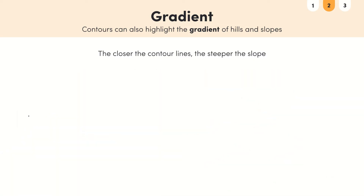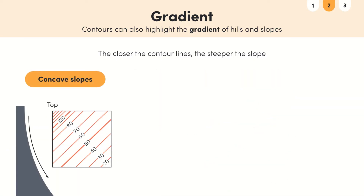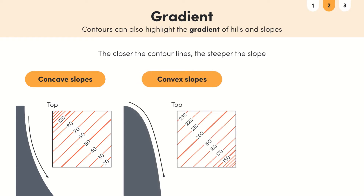A concave slope is like the inside of a circle so the slope decreases from high to low altitude. On a map, concave slopes are shown with contour lines that become more spread out as you move downhill.